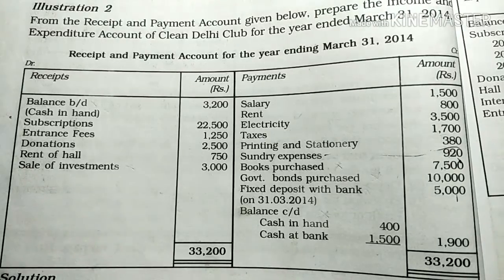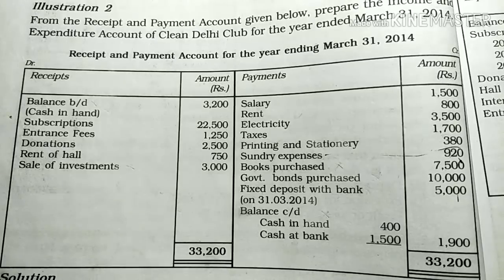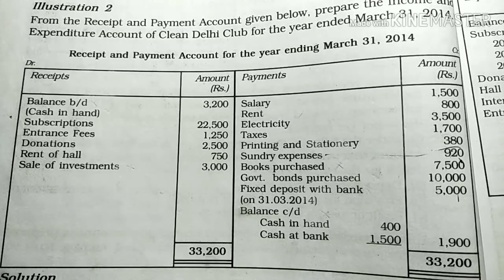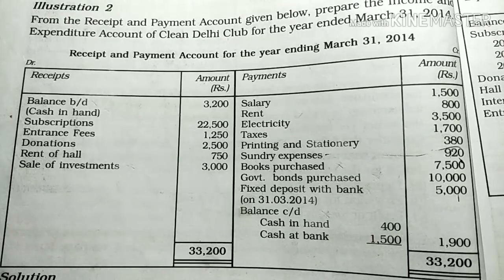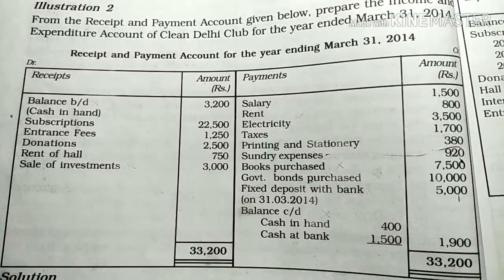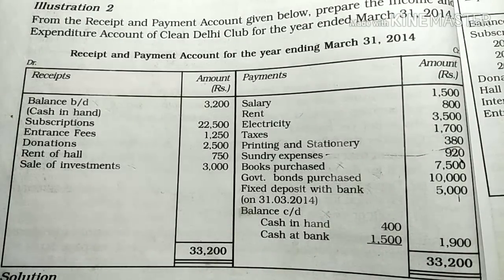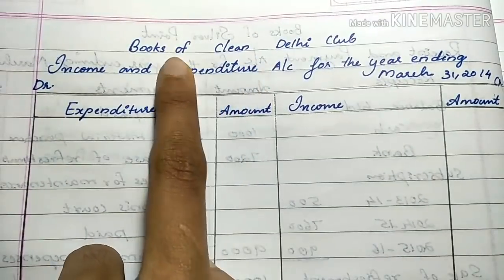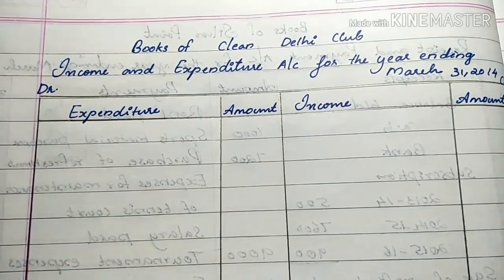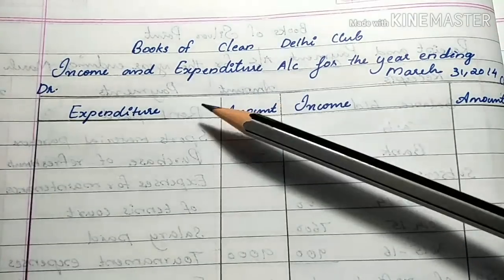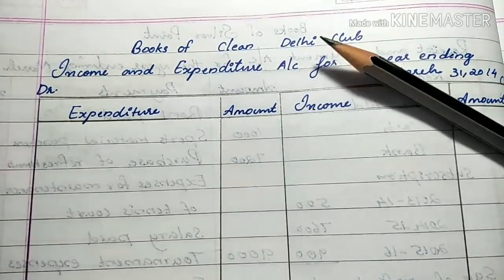This is what we are going to do with B.com. In this video, we are going to prepare the receipts and payment accounts. We have a book called Income Expenditure Account for the year, and we have to prepare the receipts and payment accounts. Now we have the name of the Income Expenditure Account.